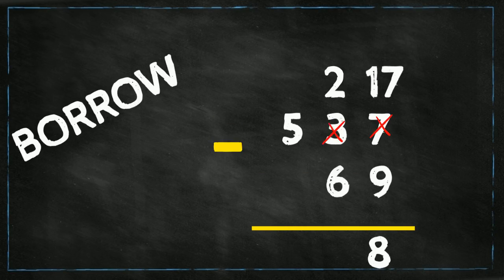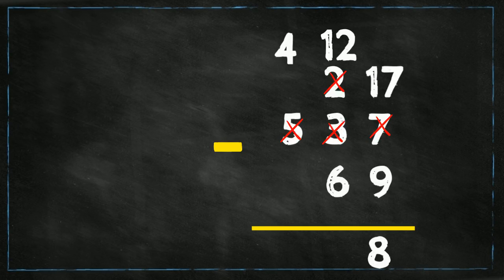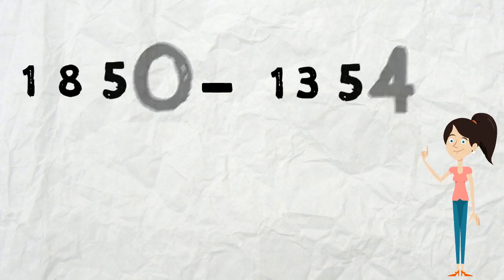Now the tens place: 2 take away 6 — another tricky situation where the top is smaller than the bottom. We borrow from next-door neighbor 5, so 5 changes to 4 and 2 changes to 12. So 12 take away 6 equals 6. Then 4 take away 0 equals 4. The difference between 537 and 69 is 468.